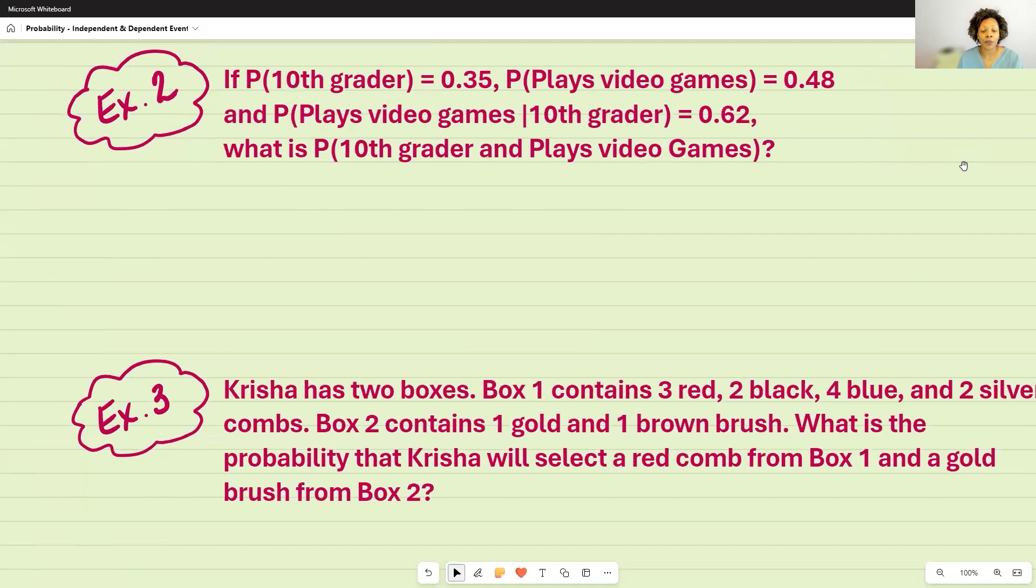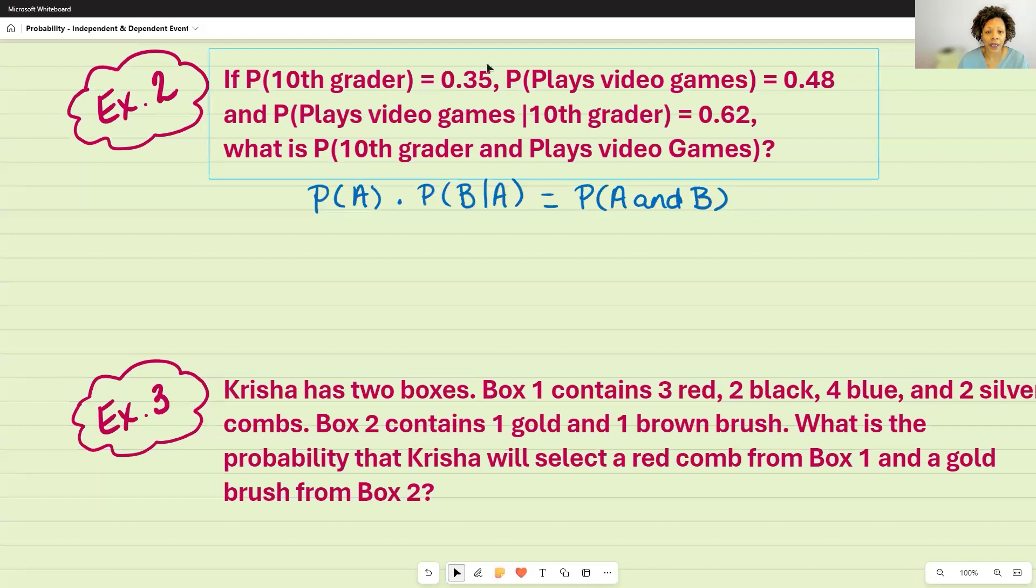So using my formulas for dependent, that is going to be the probability of A times the probability of B given that A has happened. So these two will always be the same. So if I have an A to begin with, I'm going to have an A in my denominator, and that's going to equal the probability of A and B. So substituting what I know, the probability of A, which is given, is going to be 0.35.